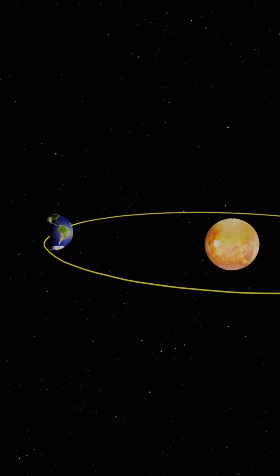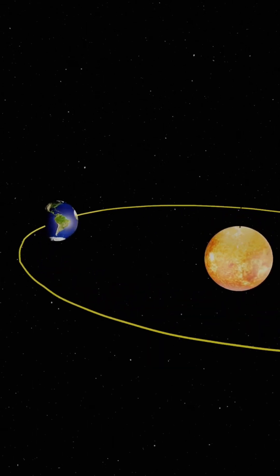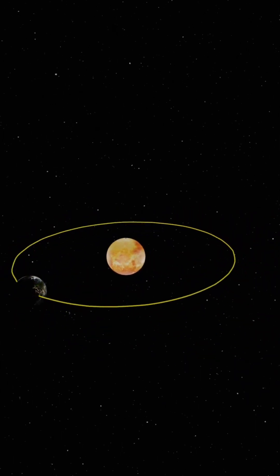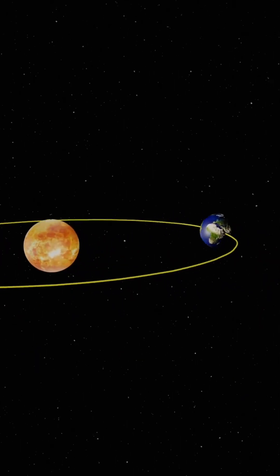Friends, this is the sun and this is our earth. As you know, one revolution of the earth means one year. Here also the earth is there, that is almost the month of June.